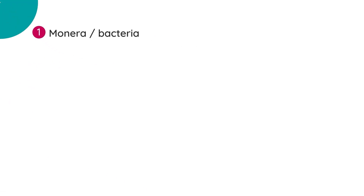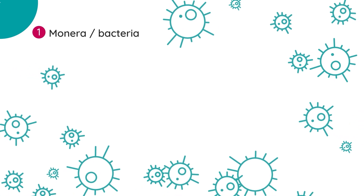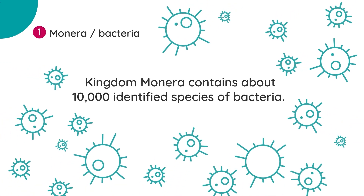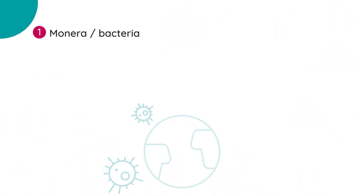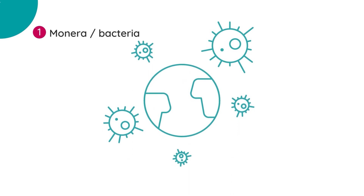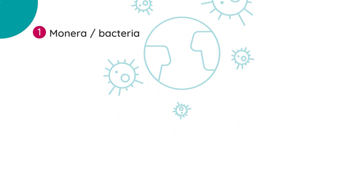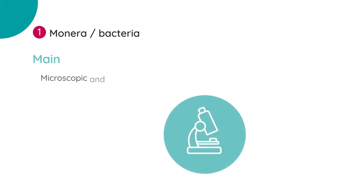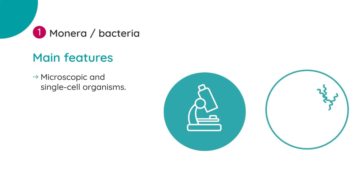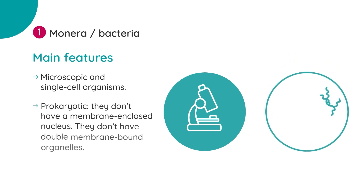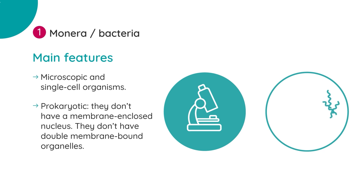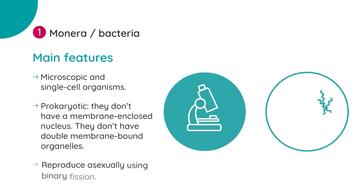Kingdom Monera contains about 10,000 identified species of bacteria. Bacteria were the first organisms to develop on planet Earth. Main features of this kingdom include: they are mainly microscopic and single-celled organisms; they are all prokaryotic, meaning that they do not have a membrane-enclosed nucleus; they do not have double membrane-bound organelles like mitochondria and chloroplasts; and they normally reproduce asexually using binary fission.